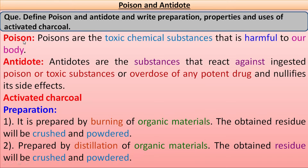First we will discuss the definition of poison. Poisons are the toxic chemical substances or toxic materials that are harmful to our body. So anything that is harmful to our body is known as poison.